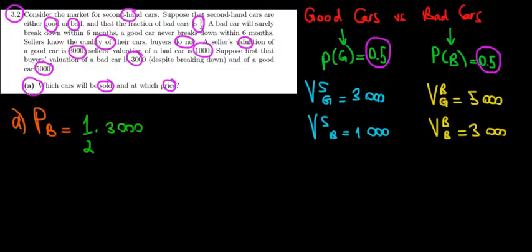So half times 3,000, plus a half times the best case where he would get a good car and he's willing to pay 5,000 euros for that. So it's a half times 5,000. The result is 1,500 plus 2,500, that's equal to 4,000 euros.